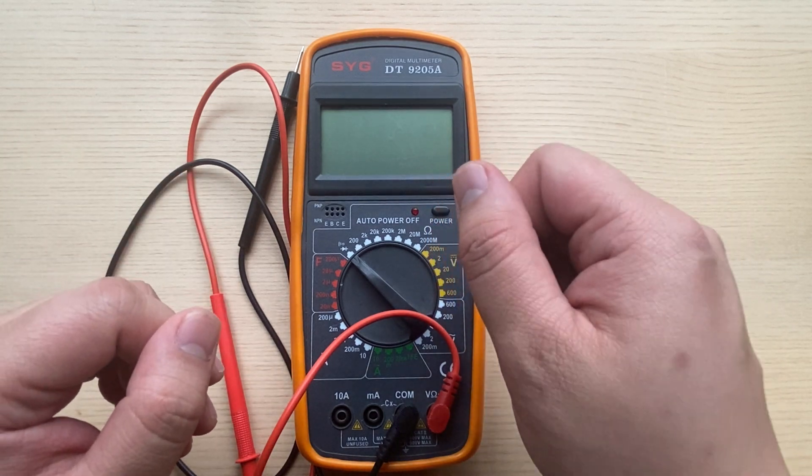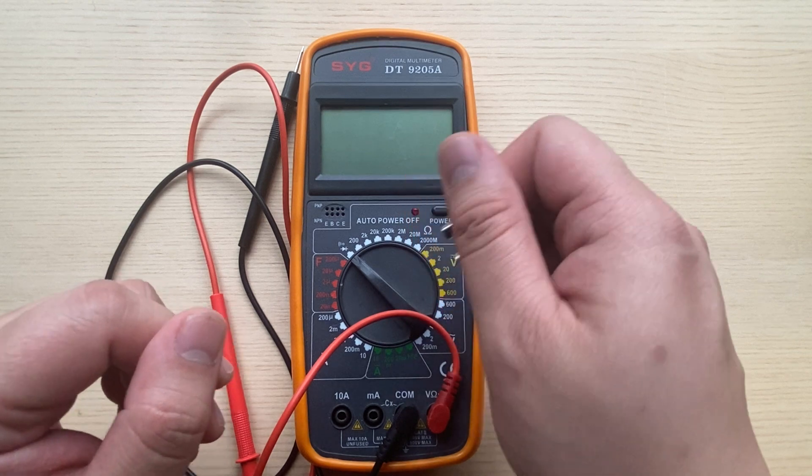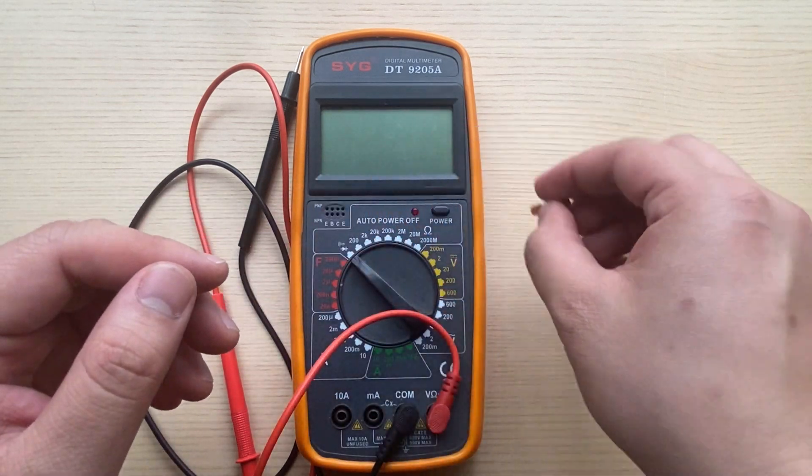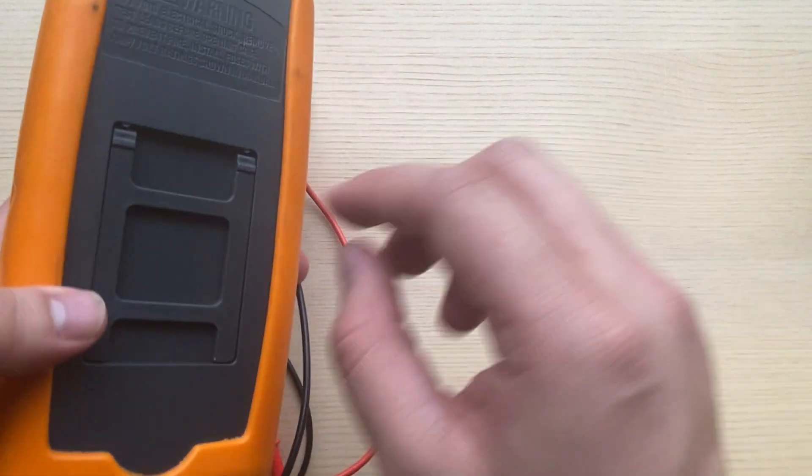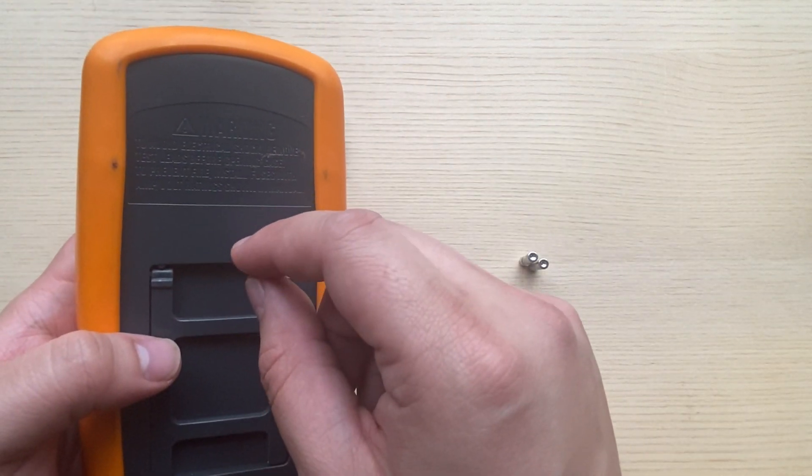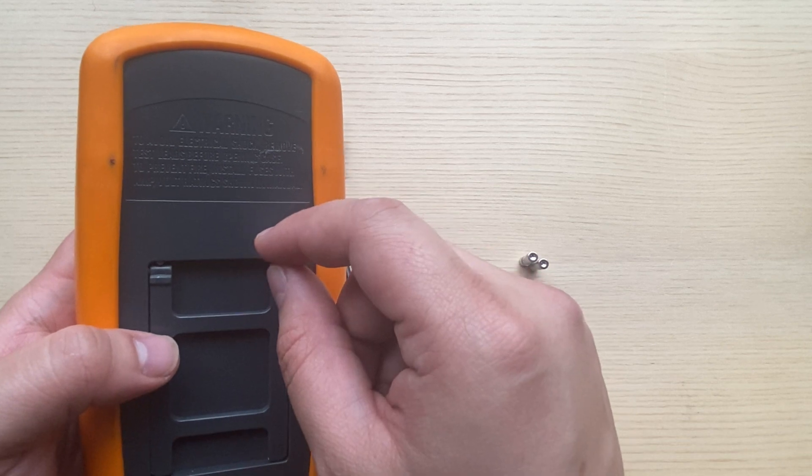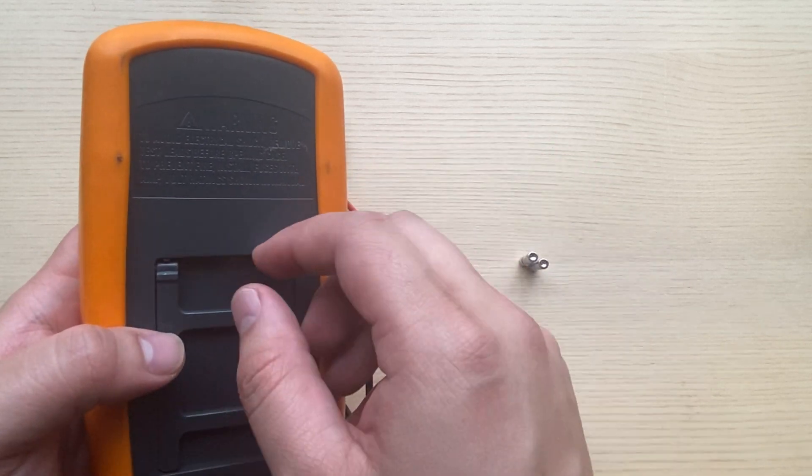Depending on your multimeter, you may have one or more of these fuses to replace. The process is pretty straightforward. Remove the back of your multimeter, unscrew the back, pop the blown fuses out, and slide in the new fuse.